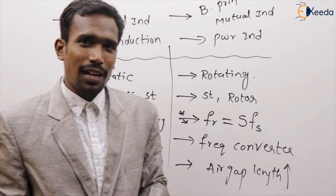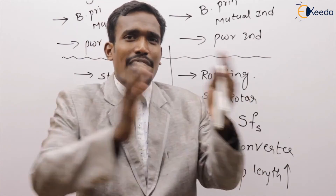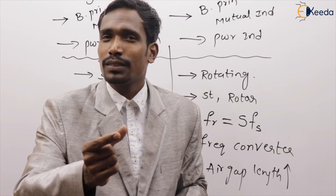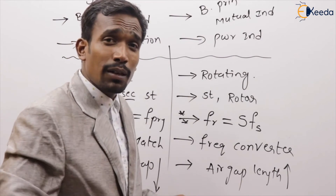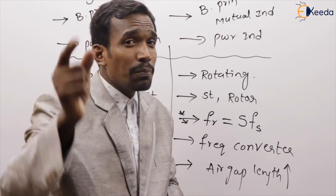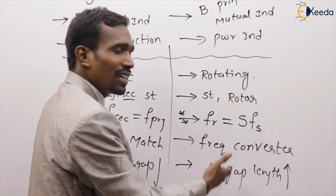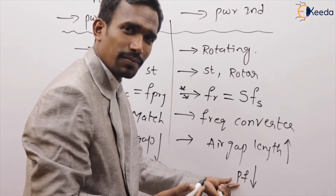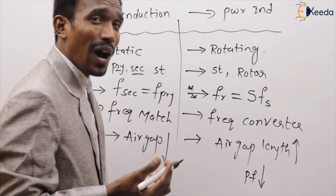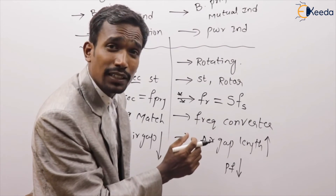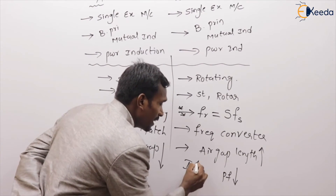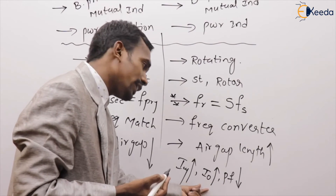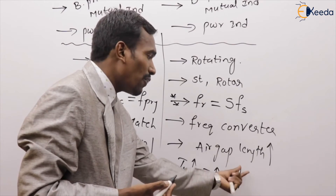In competitive exams, a question is asked: between the transformer and induction machine of equal rating, which machine has a lower power factor? The answer is the induction machine, because it has a higher air gap, which causes higher magnetizing current, higher no-load current, and therefore lower power factor. Comparatively, the transformer has less magnetizing current, less no-load current, and a higher power factor than the induction machine.